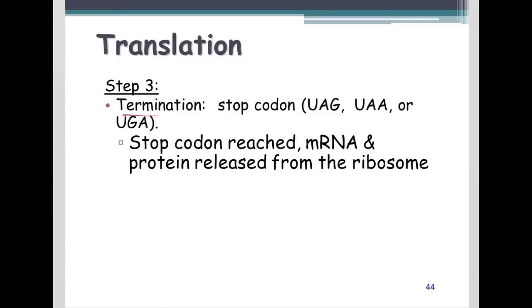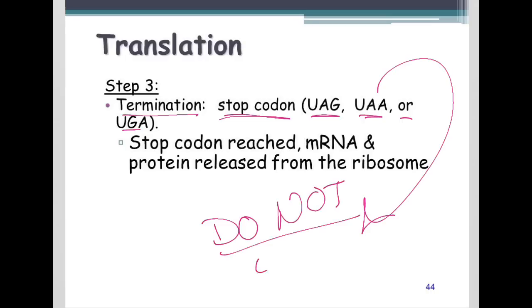At some point, we reach termination, where we get to some stop codon. And there are three possible stop codons. None of them code for an amino acid. They just code for a stop. The stop codon is reached, and the mRNA and protein are ultimately released from the ribosome, and everything goes their separate ways.